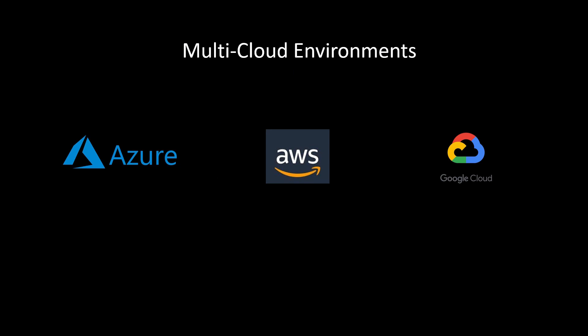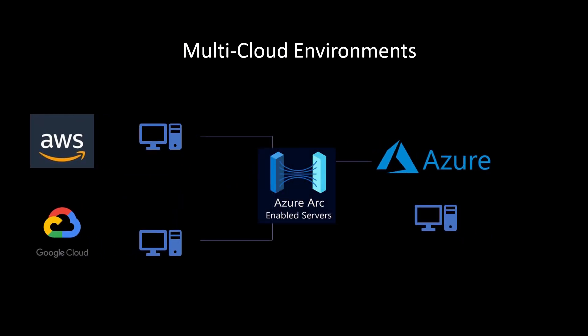In current times, most enterprises have multi-cloud environments with different servers on different platforms, and you may need a common security practice across all endpoints — servers and end-user Windows 10 machines alike. From a multi-cloud perspective, two Azure-related products can simplify things. The first is Azure Arc, which lets you onboard machines from different platforms to Azure from a security perspective.